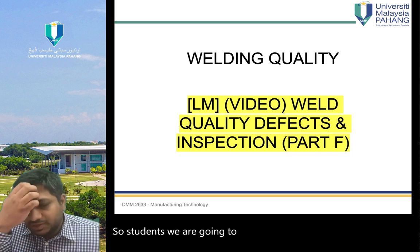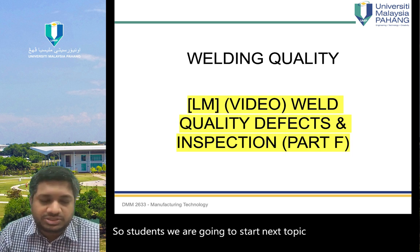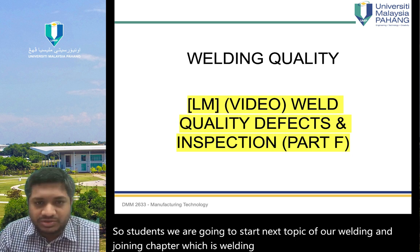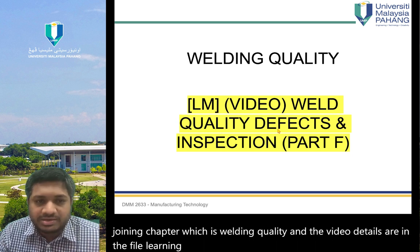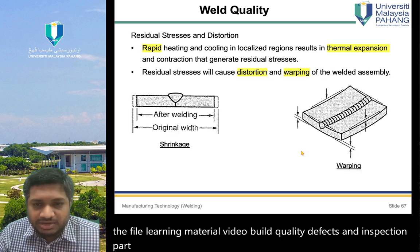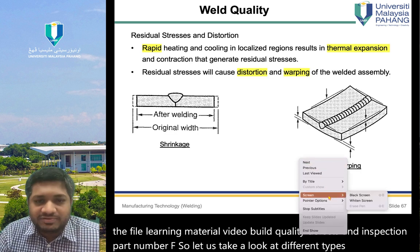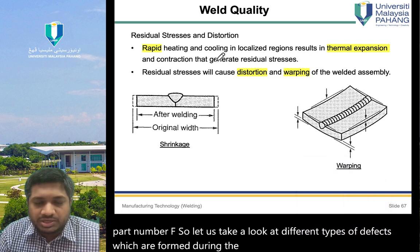We are going to start the next topic of our welding and joining chapter, which is welding quality. Let us take a look at different types of defects which are formed during the welding process.